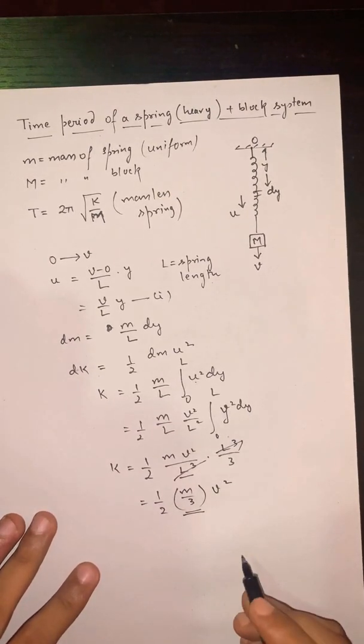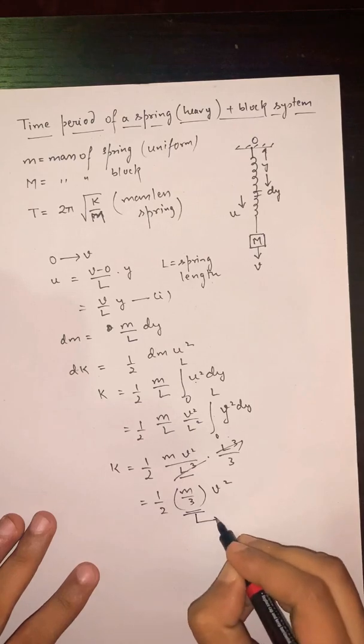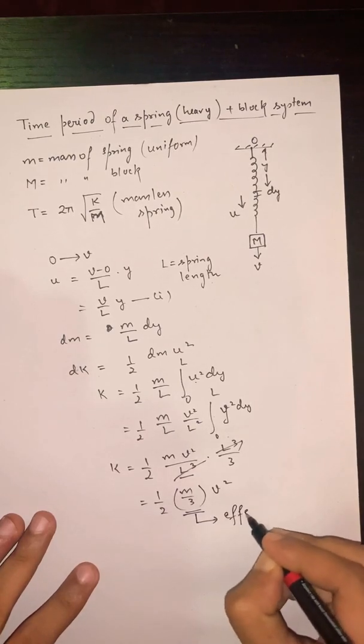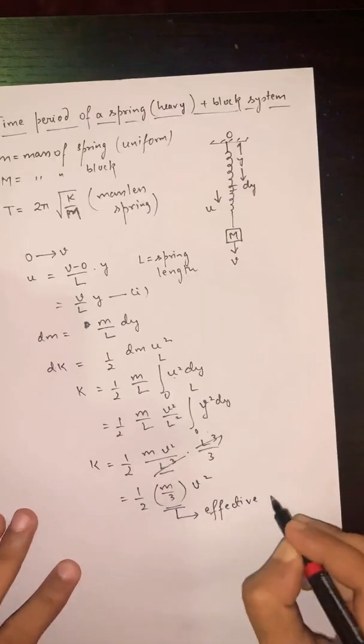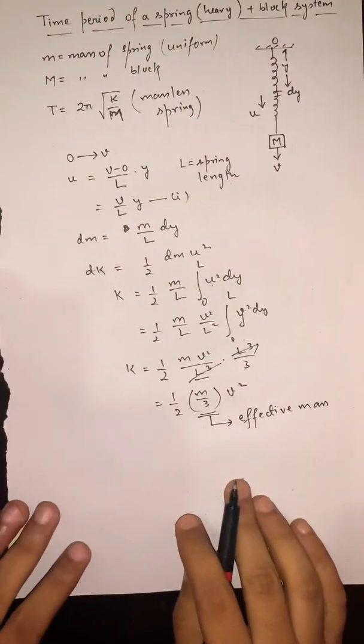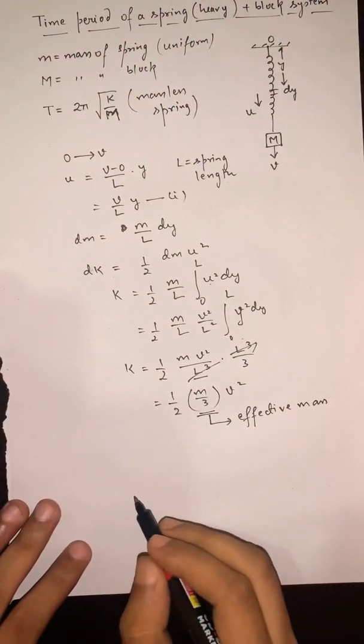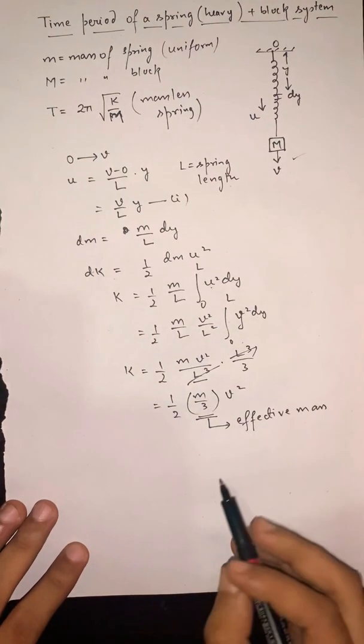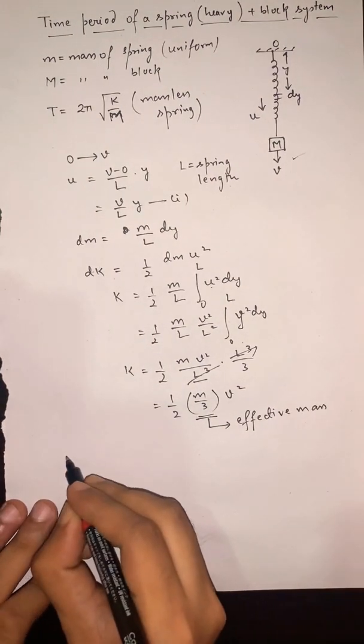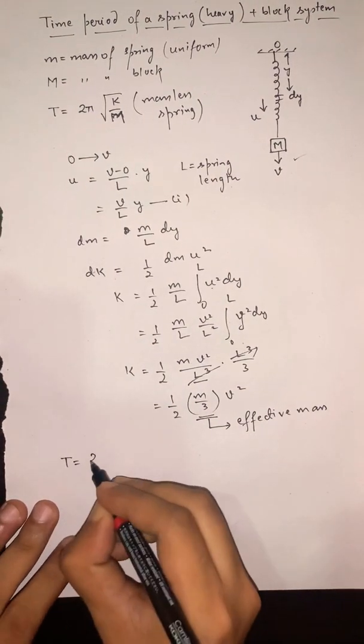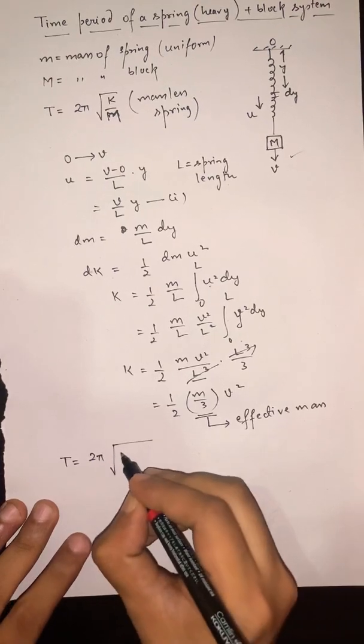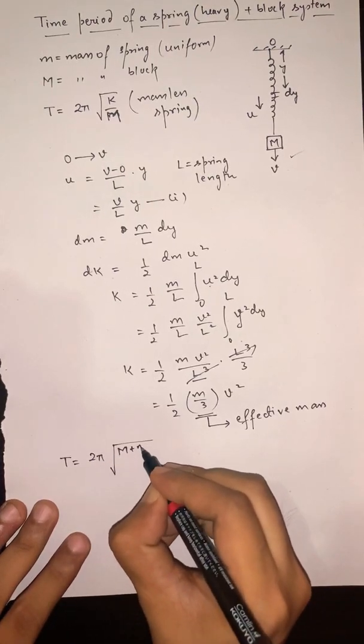You can replace that heavy spring with an effective mass m/3. The total time period of this system can be represented as 2π√((M + m/3)/k).